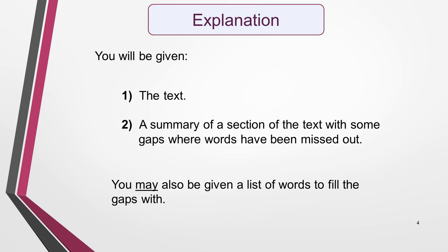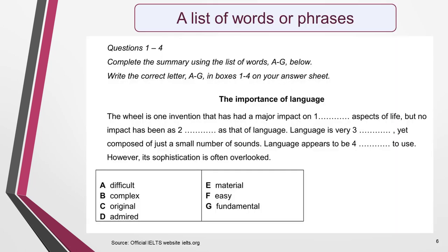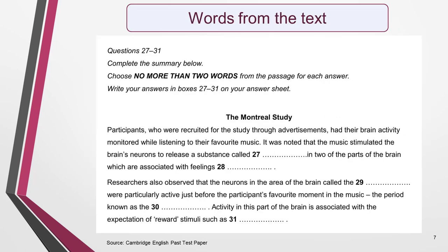You may also be given a list of words to fill the gaps with. You will be required to do one of the following tasks: fill in the gaps with words from the word list, or fill in the gaps with words from the text. On this slide and the next are two sets of instructions from past test papers to illustrate the two different forms of summary completion questions. In one example, you select the missing words from a list included in the instructions. In the other, you're required to select the missing words from the text.